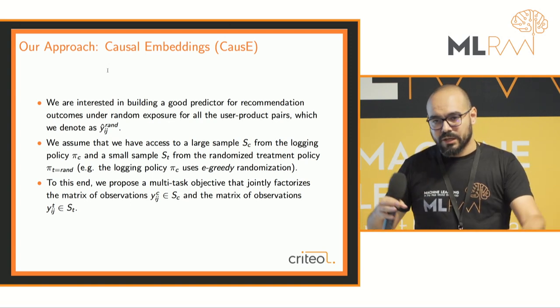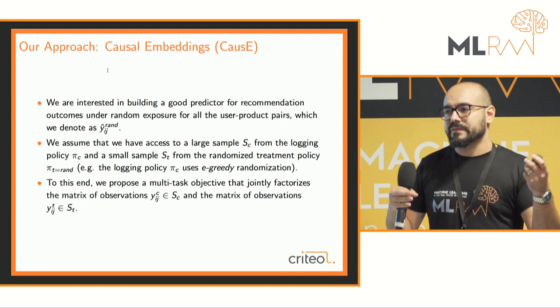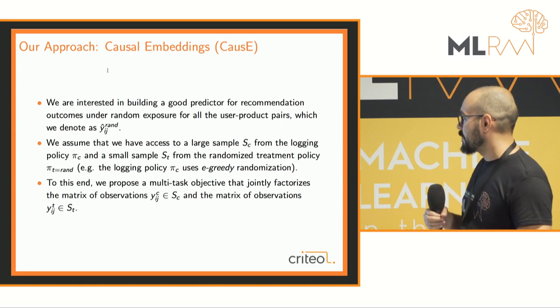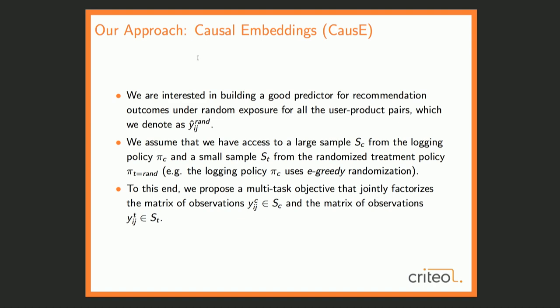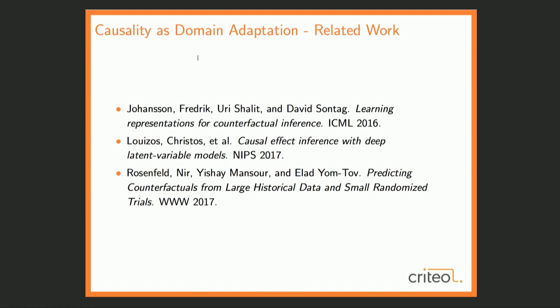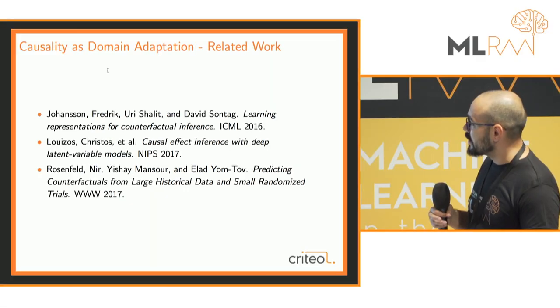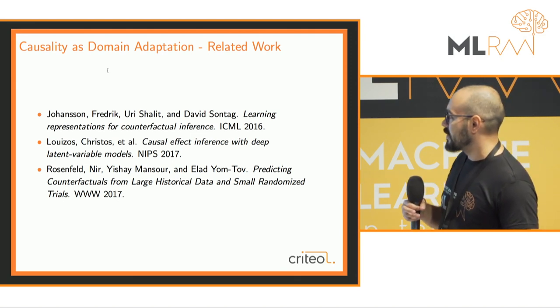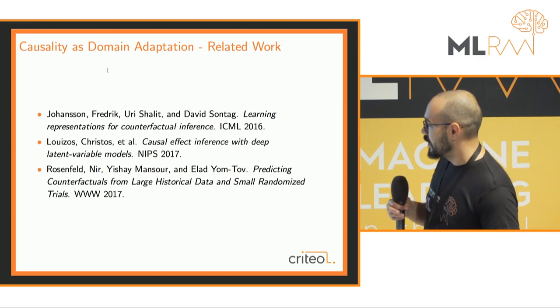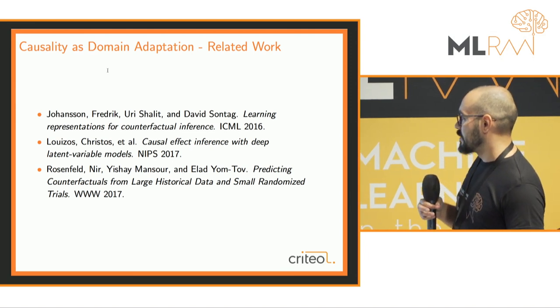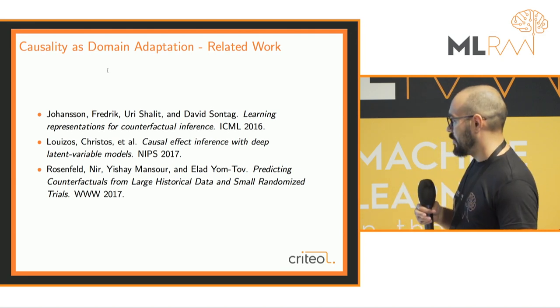We assume a setup where we have a large sample from the current logging policy — 95% greedy, 5% random (epsilon-greedy). We take these two samples: SC from control and ST from treatment (the epsilon-greedy portion), and do a joint optimization. This is not fully new — the inspiring paper was 'Learning Representations for Counterfactual Inference,' followed by work from the same group, and another group in Israel using small randomized trials to build better predictors for search.